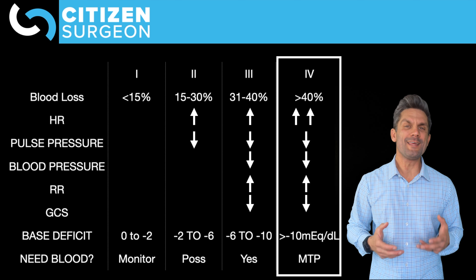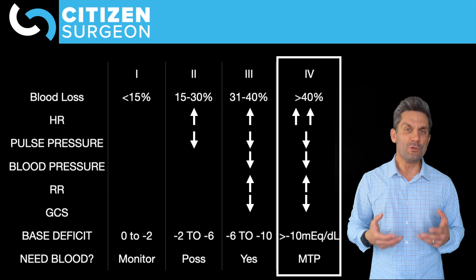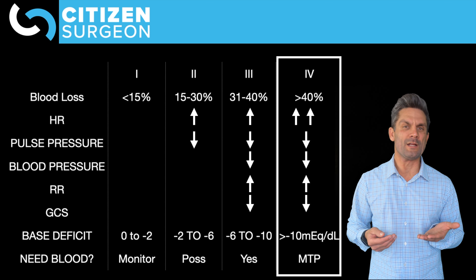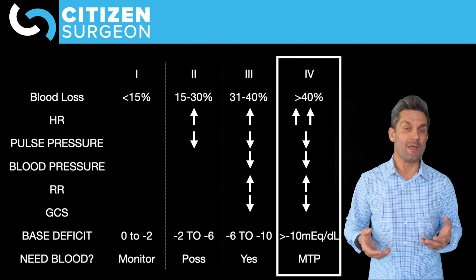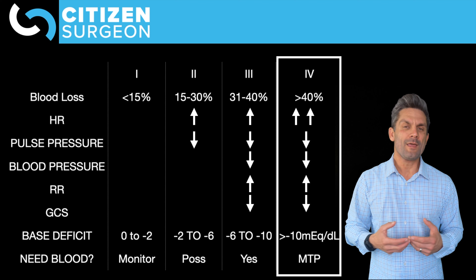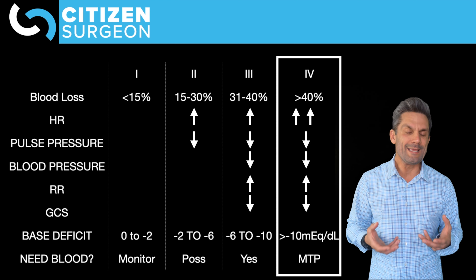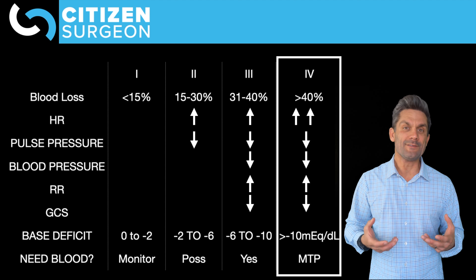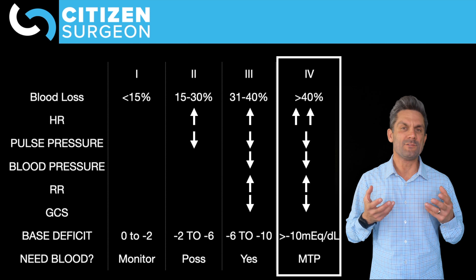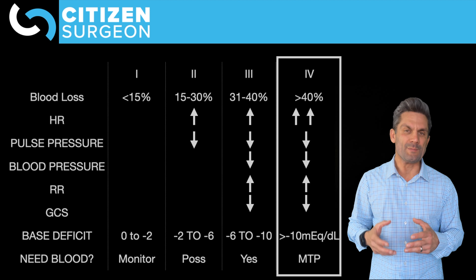Stage 4 shock is near-fatal — very high mortality. You've lost over two liters of blood, almost half your blood volume. You'll see significant tachycardia, very narrowed pulse pressure, little to no measurable blood pressure. Sometimes you can only feel a faint carotid pulse. Breathing is very shallow and rapid. GCS is significantly depressed, most likely below 8 — the patient needs immediate intubation. Base deficit is massively increased, urine output is zero, and these patients typically need a massive transfusion protocol.